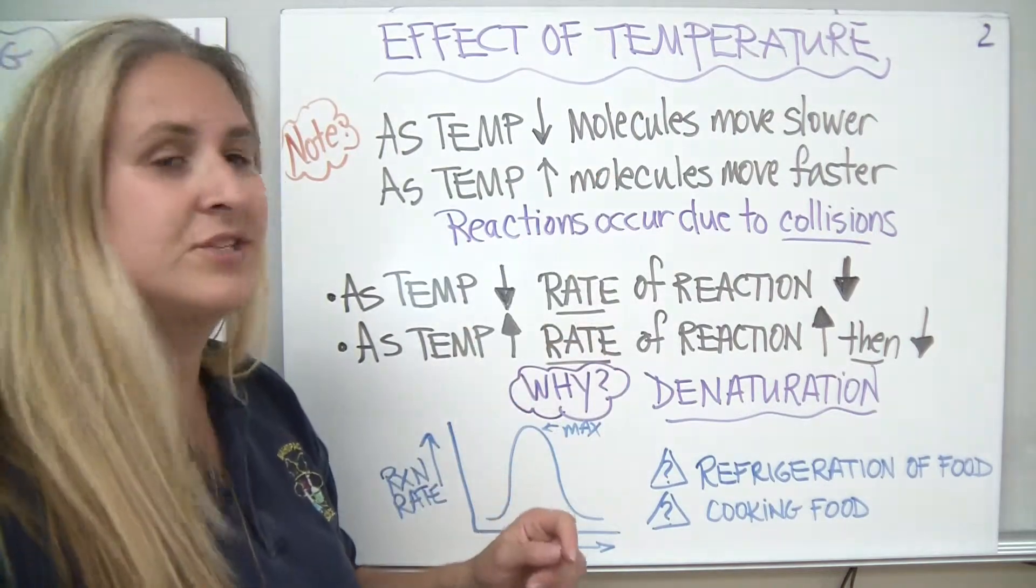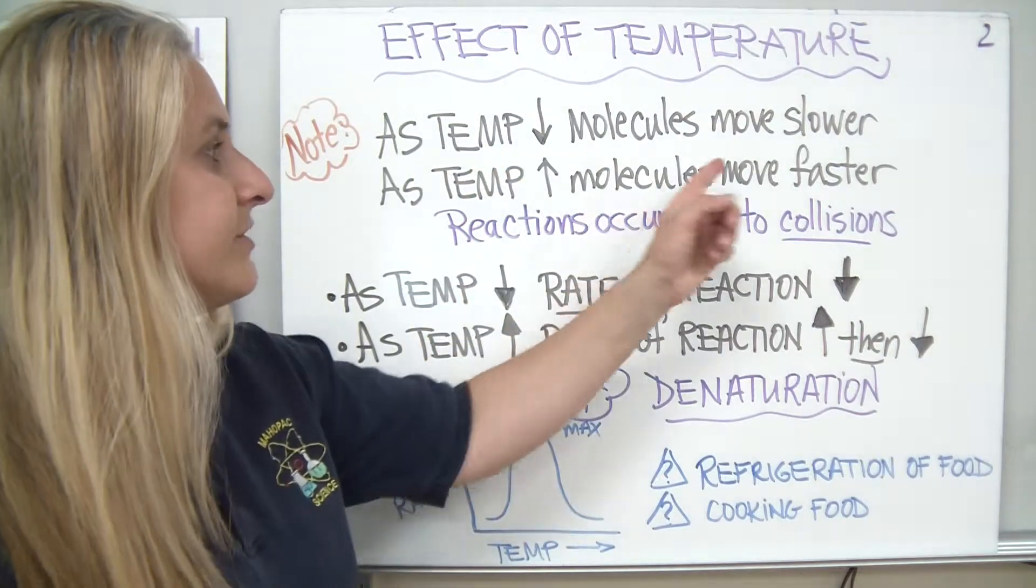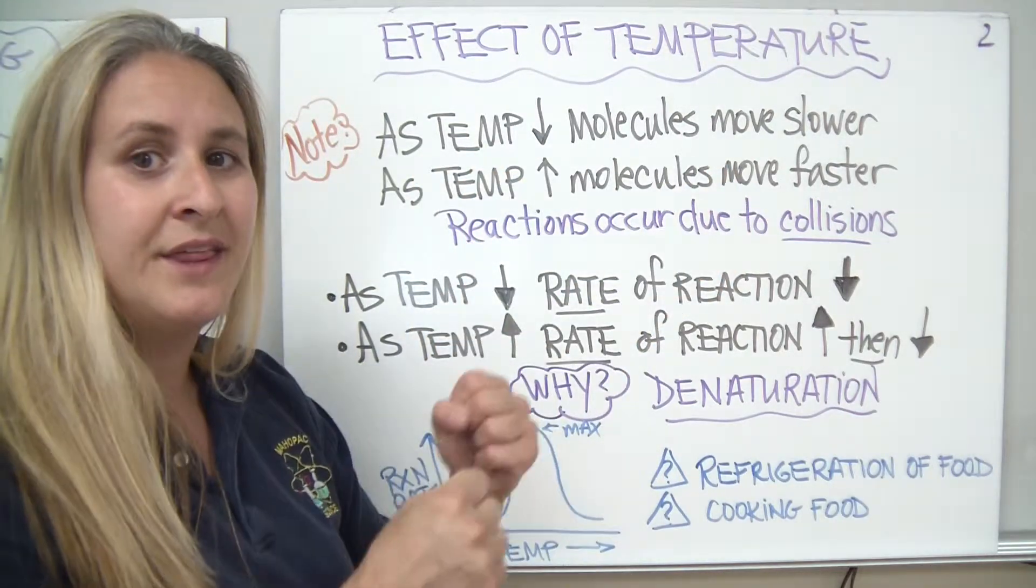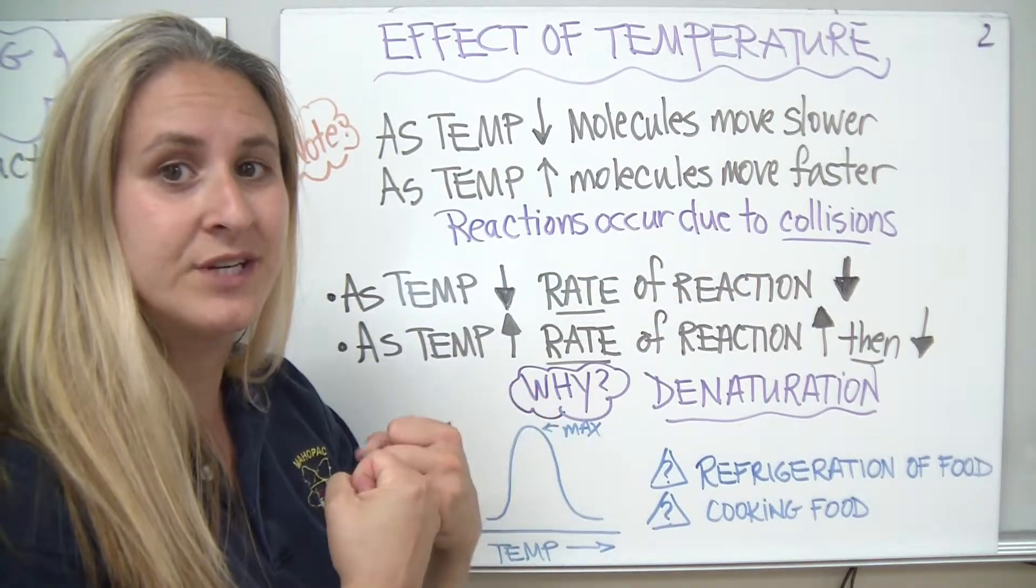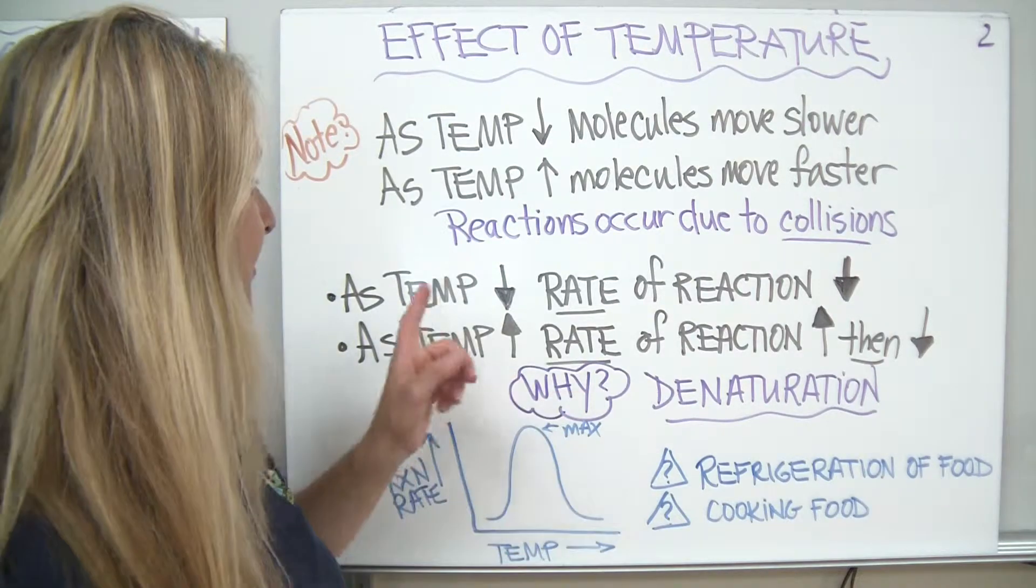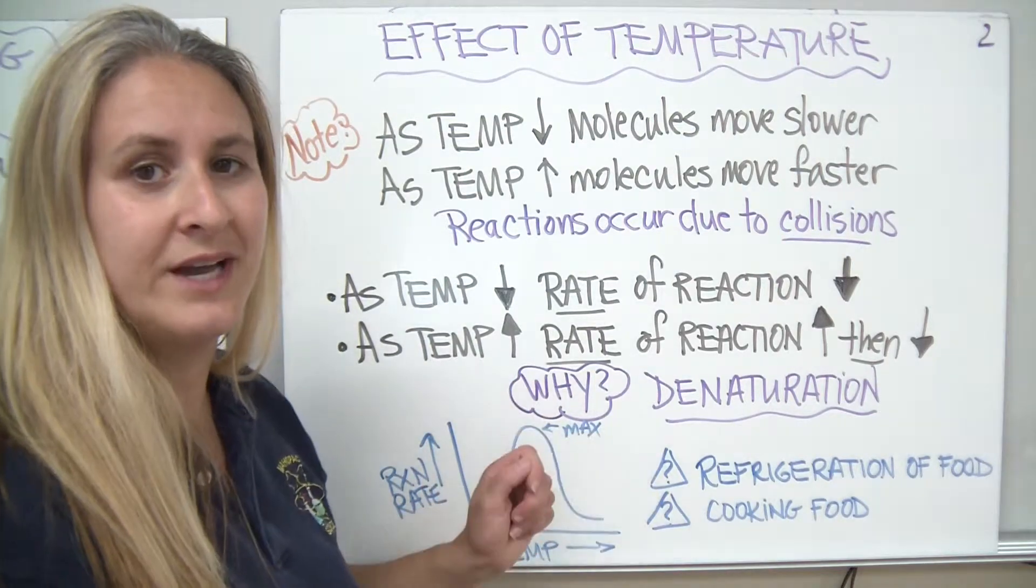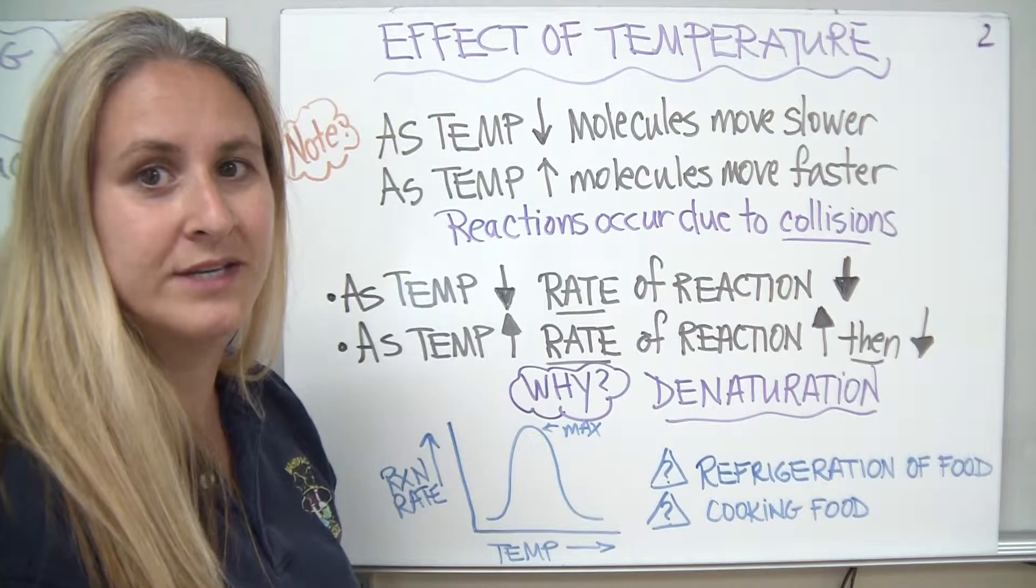Let's relate this back to our collisions. If the molecules are moving faster and faster as the temperature increases, that means they're going to have a better chance of colliding. The more collisions we have, the more reactions we have, which makes sense that if the temperature is increasing, the rate of the reaction should at least at some point increase.